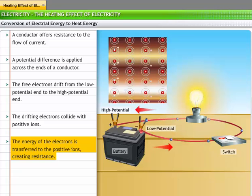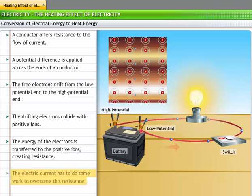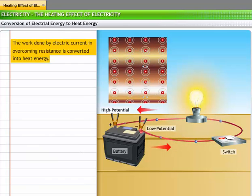When the collisions take place, the energy of the electrons is transferred to the positive ions, making the ions vibrate more violently. This creates resistance to the flow of electrons. The electric current has to overcome this resistance. The work done by electric current in overcoming this resistance is converted into heat energy. This is the heat that you use in your electrical appliances.